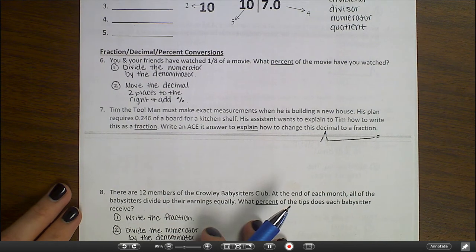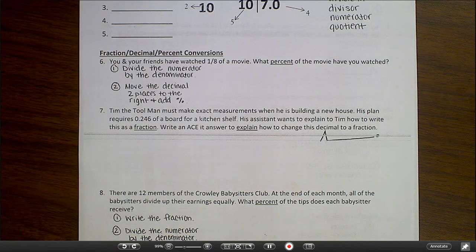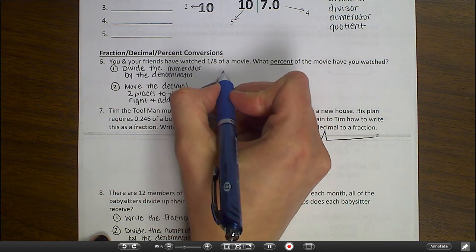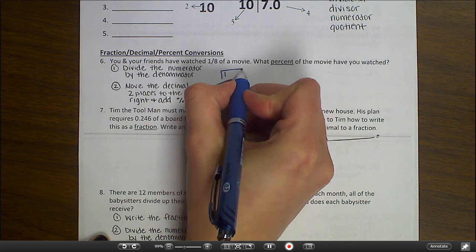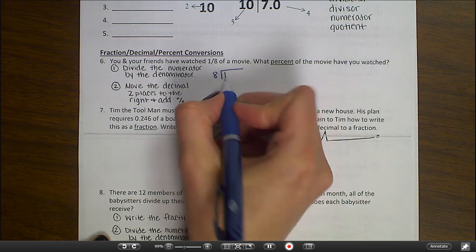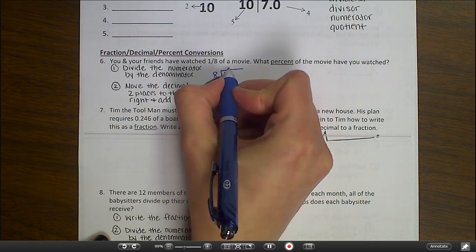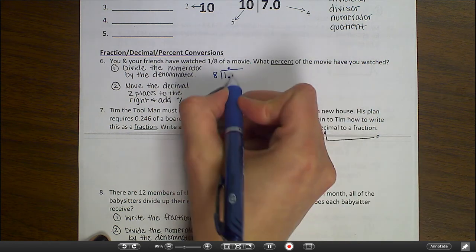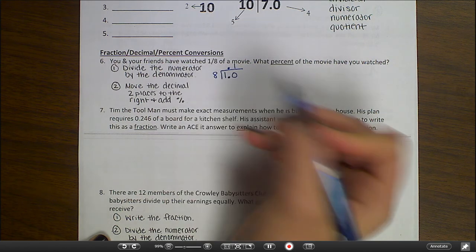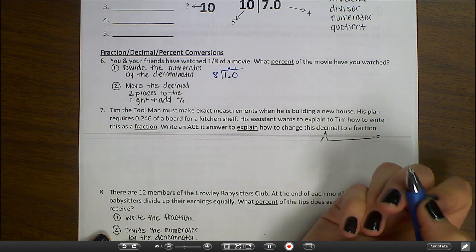Part 2 of your test is fraction decimal percent conversions. Number 6. You and your friends have watched 1/8 of a movie. What percent of the movie have you watched? First, we need to divide the numerator by the denominator. 8 does not go into 1, so I need to add a decimal, which I put in my answer, and a 0. 8 goes into 10 one time.